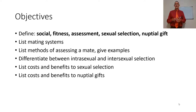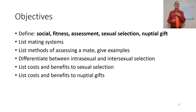Be able to list and define mating systems. List different methods of assessment and give examples. Differentiate between intra-sexual and inter-sexual selection. List costs and benefits to sexual selection. List the costs and benefits to nuptial gifts. This is better covered in your book.